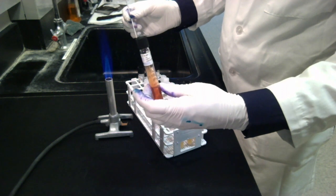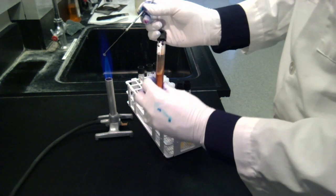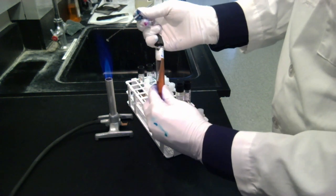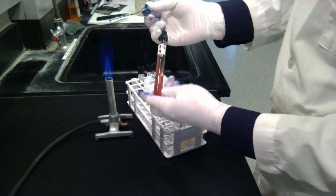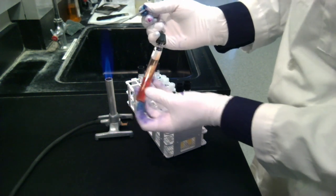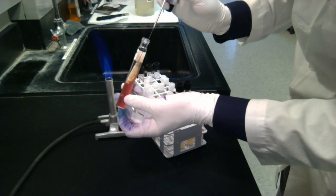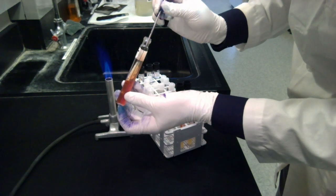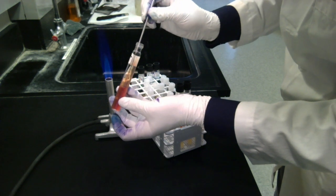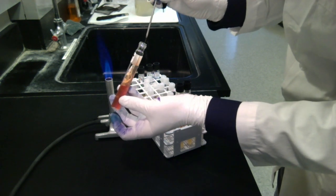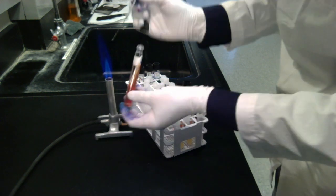I'm going to start with my triple sugar iron agar. So the idea with this is I'm going to stab all the way down first. And as I come out, I'm going to swipe it along the slant. So I go down, try to go down without touching the sides. Pierce the agar and go all the way to the bottom. Come up along the same line. And then drag it along the slanted portion. Then come out without touching the side. Close it up.